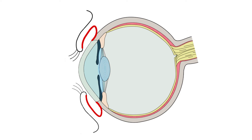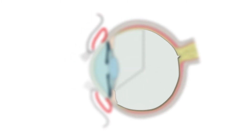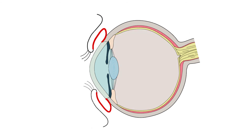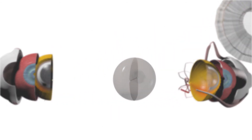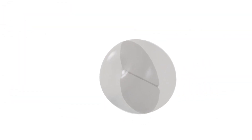Posterior chamber: the small space filled with aqueous humour behind the iris and in front of the anterior lens capsule. Vitreous cavity: the relatively large space of 4.5cc behind the lens that extends to the retina. The cavity is filled with a transparent jelly-like material called vitreous humour.